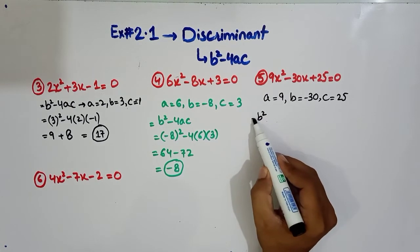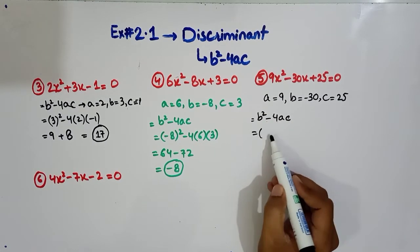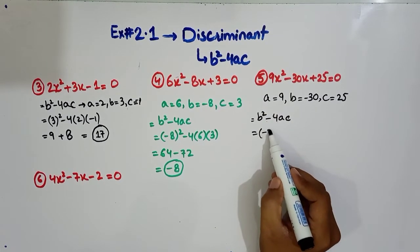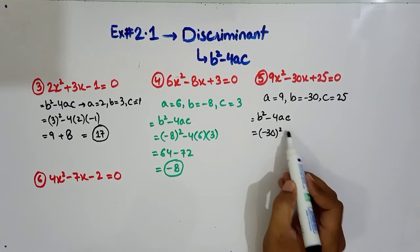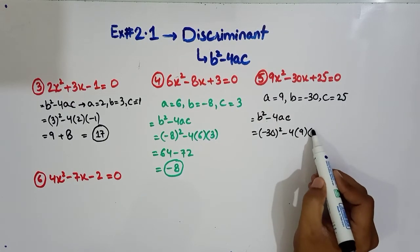Same discriminant formula b squared minus 4ac. We will put some values. 4, a to 9, c to 25.